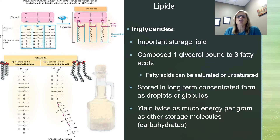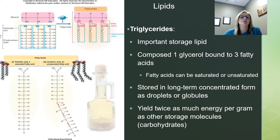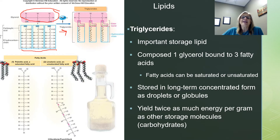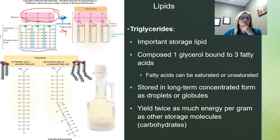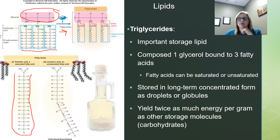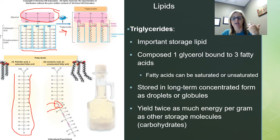Triglycerides are our fats and oils — a very important storage lipid. They're made of one glycerol bound to three fatty acids. Fatty acids can be saturated or unsaturated, and the degree of saturation depends on the number of bonds. A saturated fatty acid has all the possible hydrogens that it can have attached. An unsaturated fatty acid has double bonds — instead of those hydrogens, you have a double bond, so it does not have all possible hydrogens.